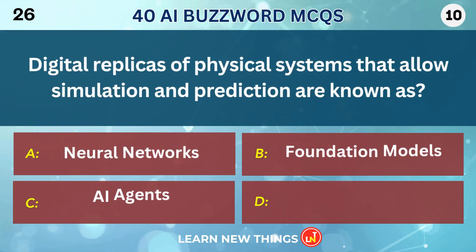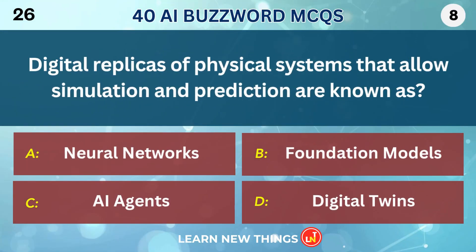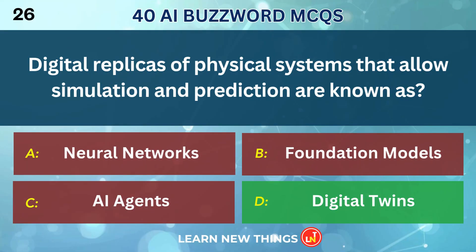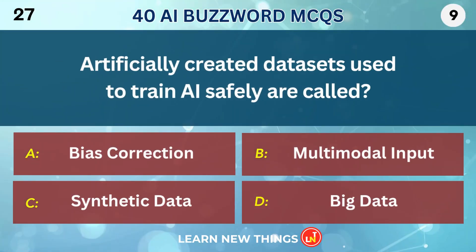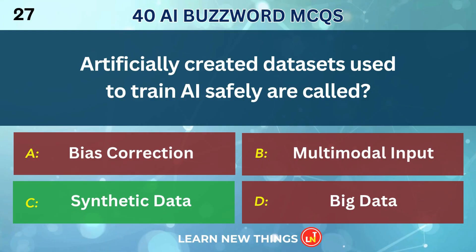Digital replicas of physical systems that allow simulation and prediction are known as Digital Twins. Artificially created datasets used to train AI safely are called Synthetic Data.